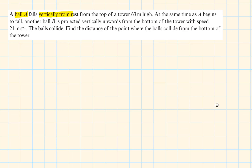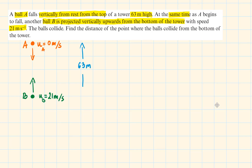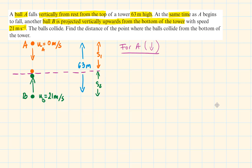Let's look at a final example. A ball A falls vertically from rest from the top of a tower 63 metres high. At the same time as A begins to fall, another ball B is projected vertically upwards from the bottom of the tower with speed 21 metres per second. We need to find the distance of the point where the balls collide from the bottom of the tower. We label the displacement of A to the collision point as S1, and the displacement of B to the collision point as S2. Since A is moving downwards, its acceleration due to gravity is positive. Since B is moving upwards, its acceleration due to gravity is negative.